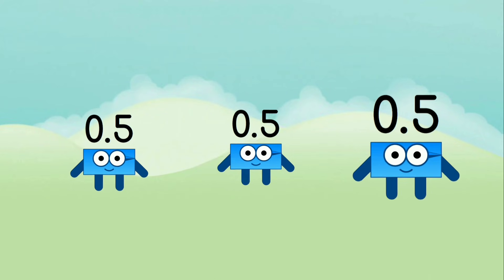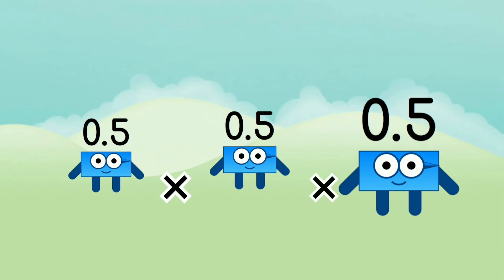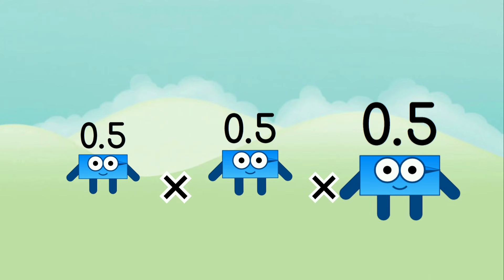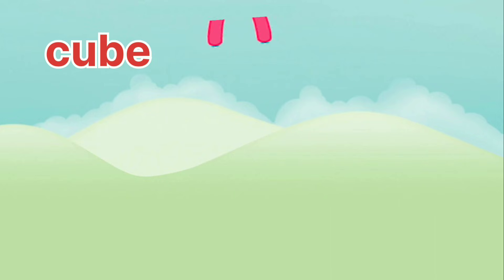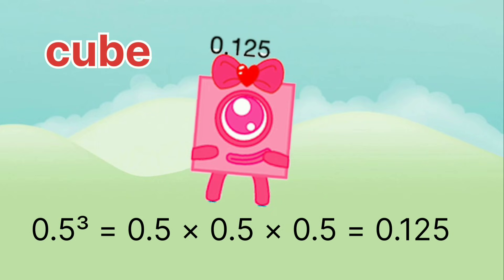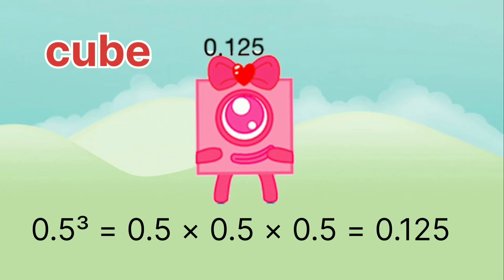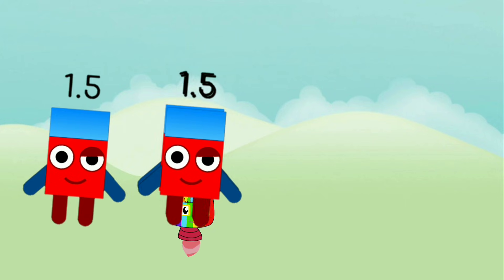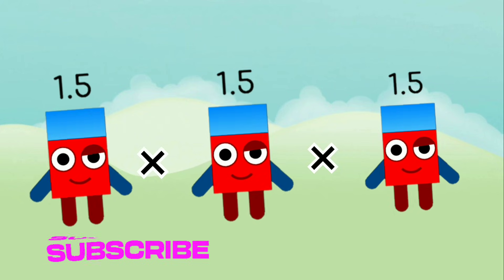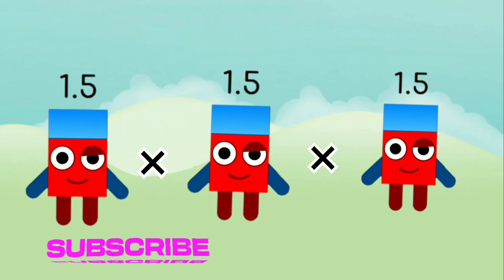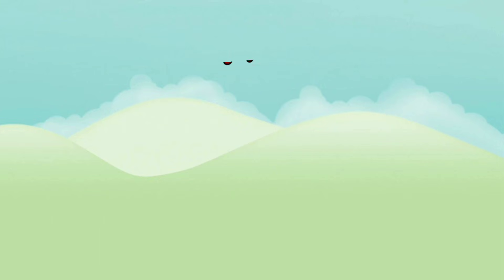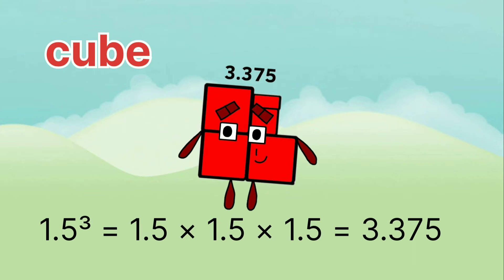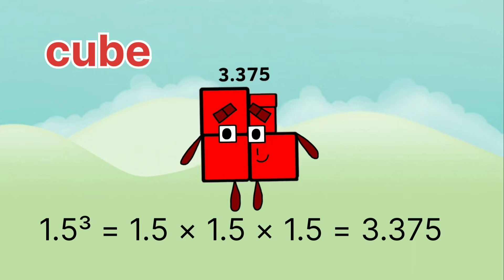0.5 x 0.5 x 0.5 equals 0.125. 1.5 x 1.5 x 1.5 equals 3.375.